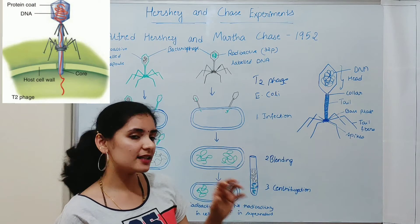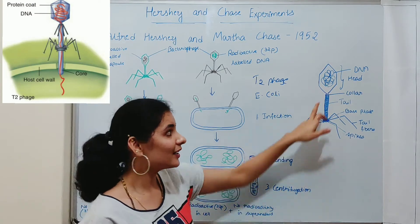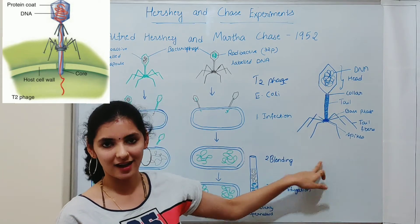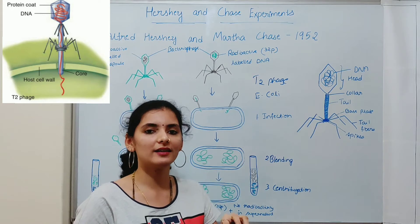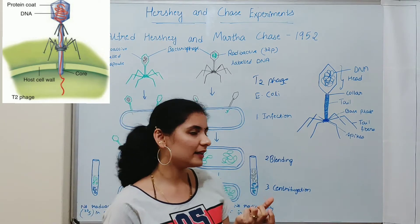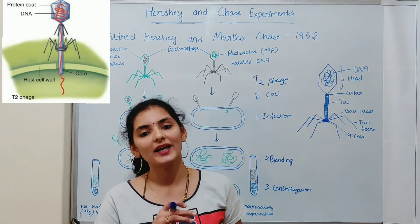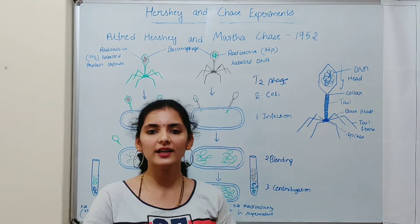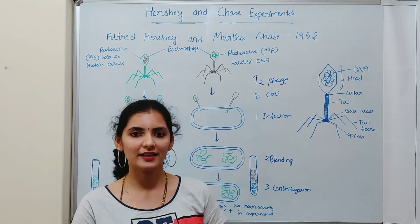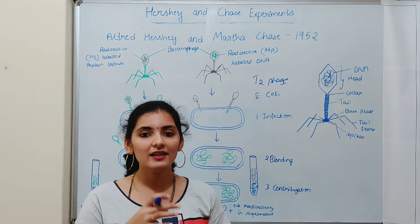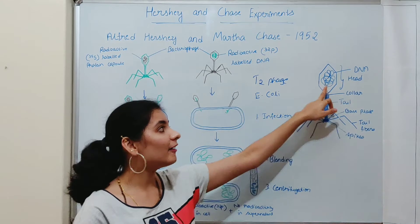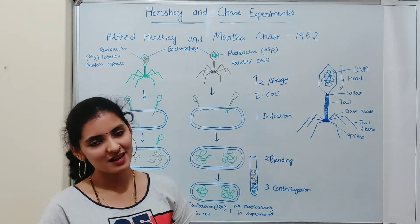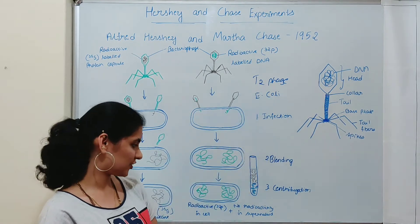Once the virus attaches itself to bacteria, it starts to release its DNA — the genetic material — into the bacteria. The bacteria then receives the viral DNA and recognizes it as its own DNA. As a result, it starts to replicate the viral DNA. So unknowingly, the bacteria start to make copies of the viral DNA. That is what exactly happens when a bacteriophage infects bacteria.